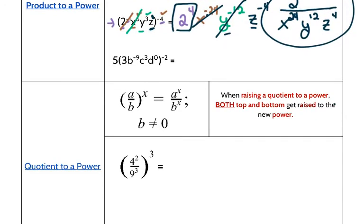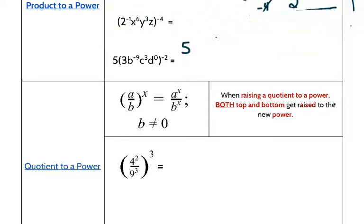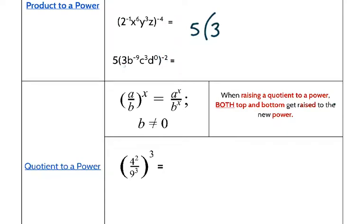Be careful — this 5 is outside the parentheses, so I cannot apply the negative 2 to it. I'm just going to rewrite my 5. Starting inside: the 3 has an implied exponent of 1, so 1 times negative 2 is negative 2. B: negative 9 times negative 2 is positive 18. C: exponent of 3 times negative 2 is negative 6.